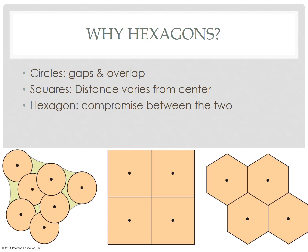With squares, the distance from the center varies quite a bit, so hexagons are a compromise. They nest together — meaning they touch without any gaps or overlap — and the distance from the center point doesn't vary as much as in a square. Obviously it varies a little, and someone further from the city will have to travel a bit further, but hexagons make the most practical sense for this model.